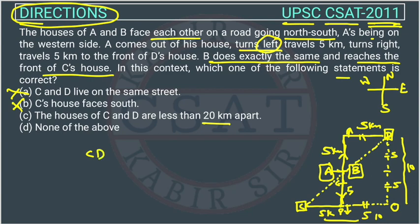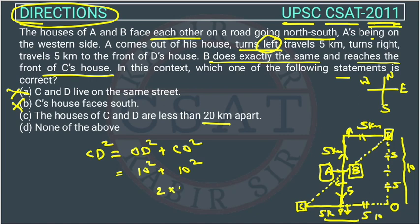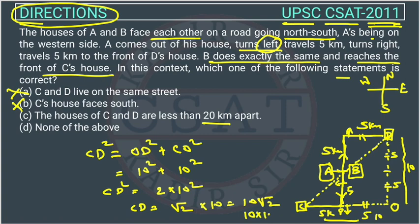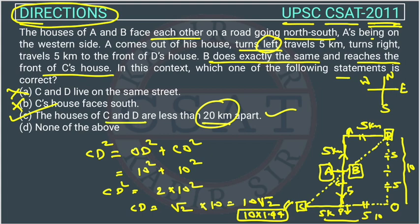Now applying the Pythagoras theorem: CD² = OD² + CO² = 10² + 10² = 2 × 100 = 200. So CD = √200 = 10√2. Since √2 ≈ 1.44, CD ≈ 14.14 km, which is less than 20 km. So this statement is correct — the distance between C and D is less than 20 kilometers. Therefore, option C is the answer.